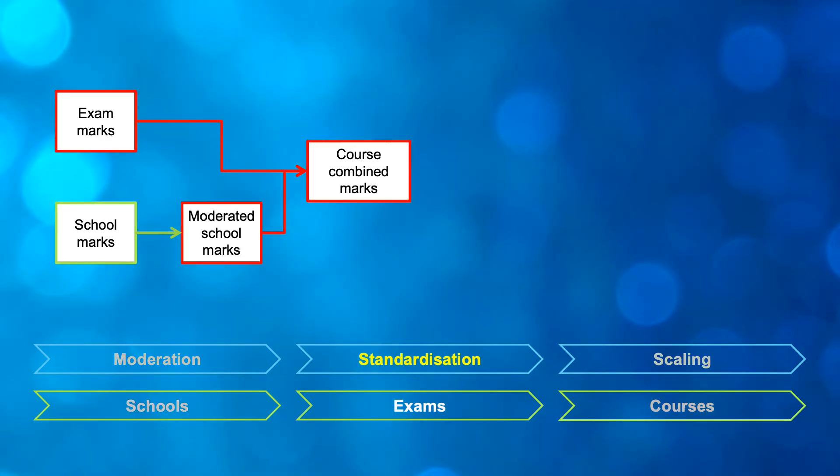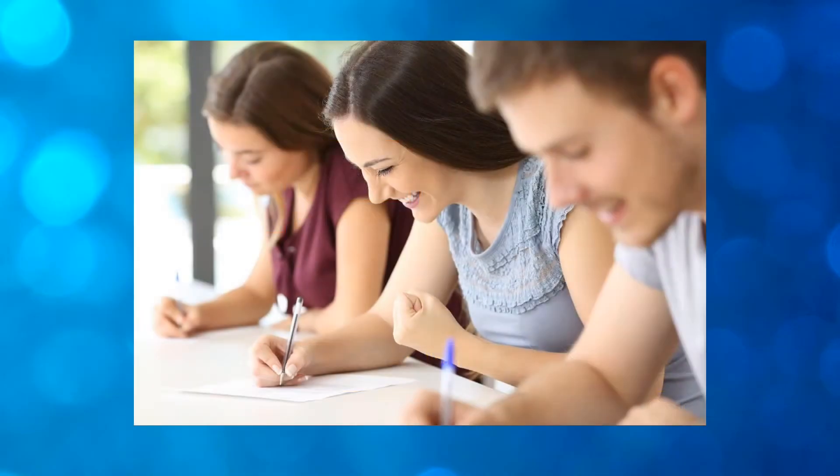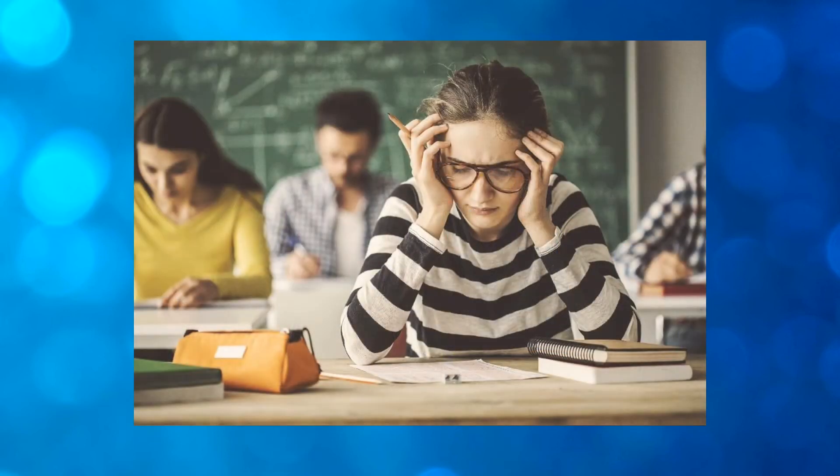The second process is called standardization, and this is where we just make sure that no one's advantaged or disadvantaged depending on whether they get a tougher exam paper or an easier exam paper at the end of the year. You would know that some tests that you do can be tougher than others. You might have a test that's really fair and easy and everyone feels that they can have a good go at it. Another test just might be really tough and even the best person in that subject found it a struggle as well.